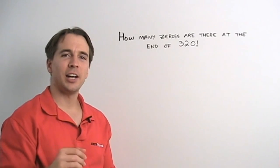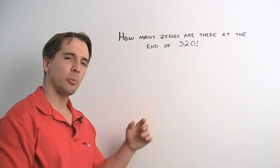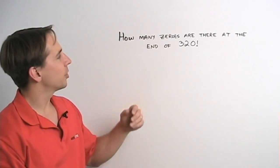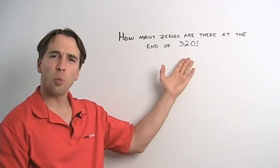We're now going to take a look at a particularly challenging factorial problem. Here's the problem. How many zeros are there at the end of 320 factorial?